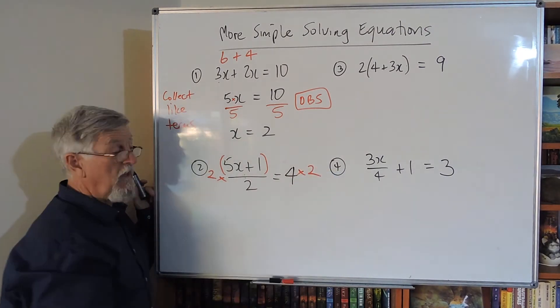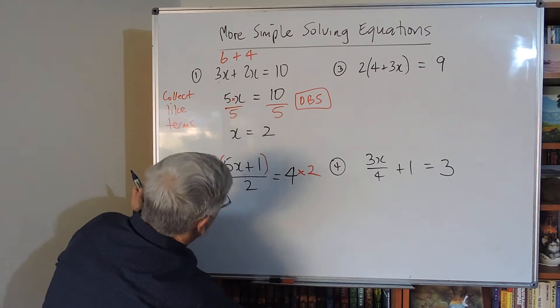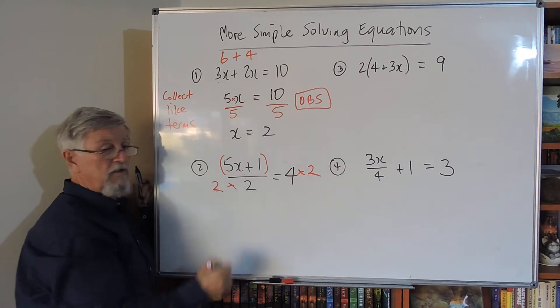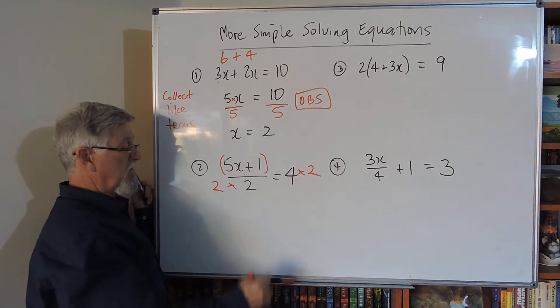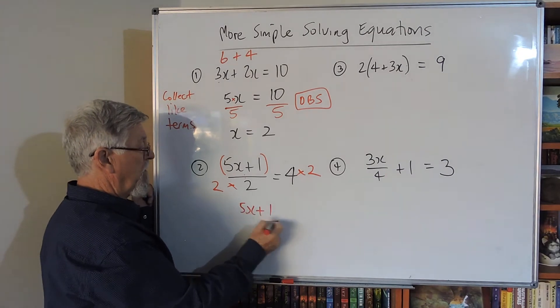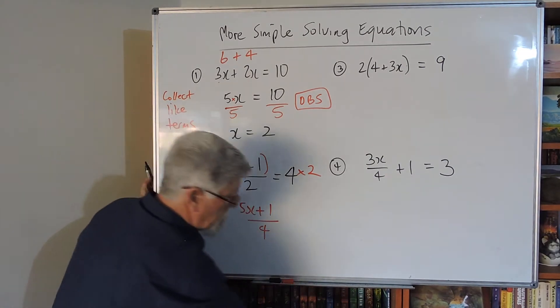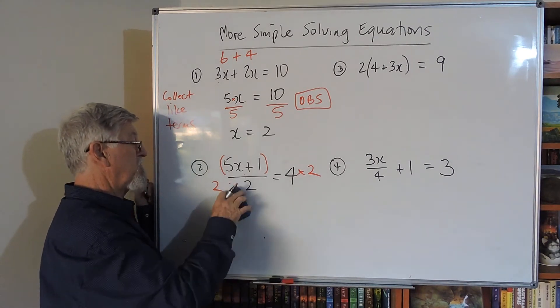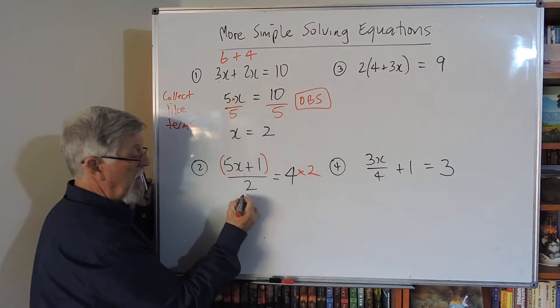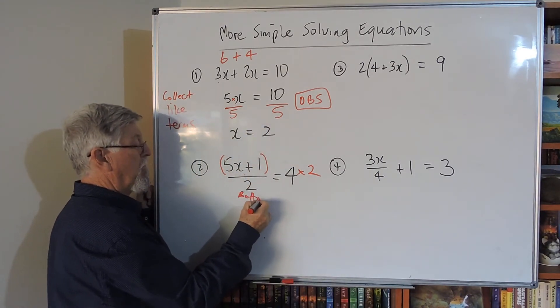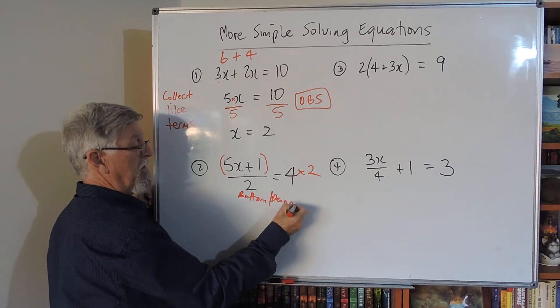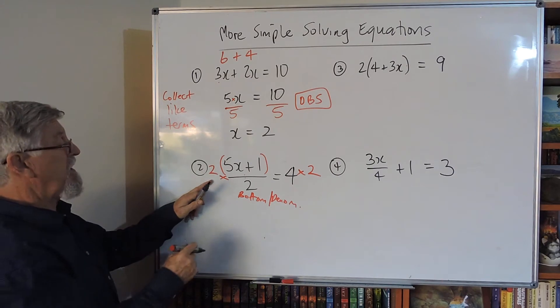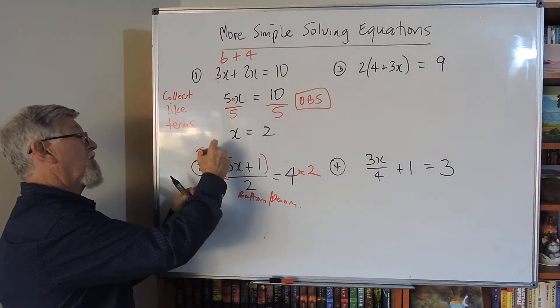I do see students who know to go times by two but they write it down wrong and get in a mess. When I multiply by two, I try to make it look like it's a numerator because a top can cancel with a bottom.